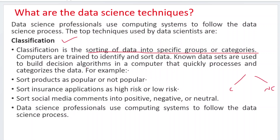Known datasets are used to build decision algorithms in a computer which quickly processes and characterizes the data. For example, sort the products as popular or not popular — I want to categorize whether products are popular or not popular. Another example: how to sort insurance applications as high risk or low risk categories, and how to categorize social media comments into positive, negative, or neutral comments. Data science professionals use computing systems to follow all this process.